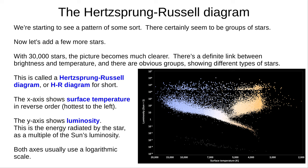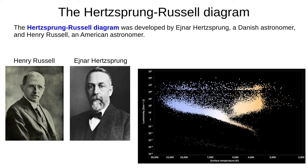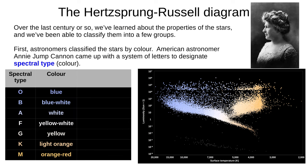There are many ways of drawing an HR diagram and astronomers haven't really been able to agree on one standard, but they generally follow the same basic form. The x-axis shows surface temperature in reverse order, hottest to the left. The y-axis shows luminosity — the energy or power radiated by the star — and both axes usually use a logarithmic scale. The Hertzsprung-Russell diagram was developed independently in the 1910s by Danish astronomer Einar Hertzsprung and American astronomer Henry Russell. Over the last century we've learned a lot about the properties of stars, which helped us classify them into groups.